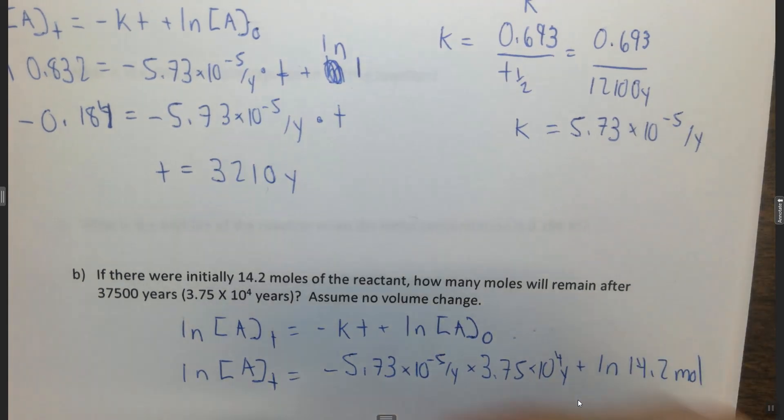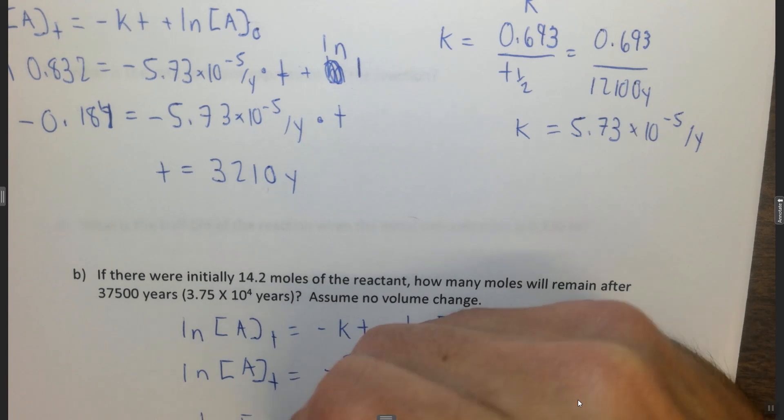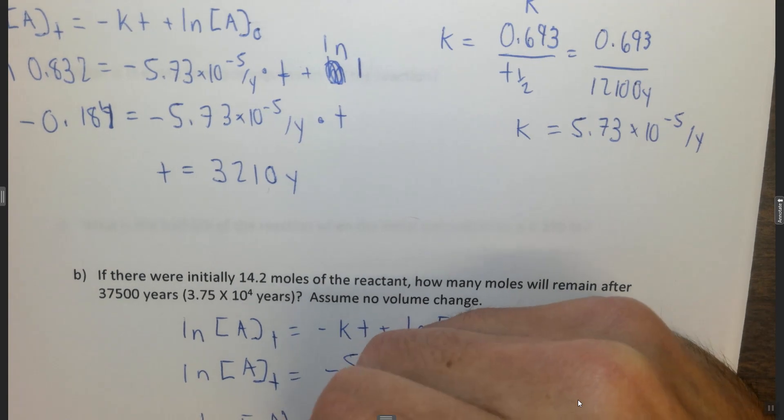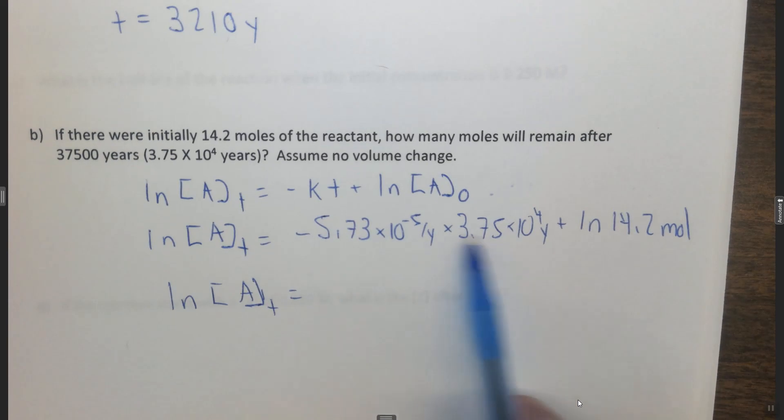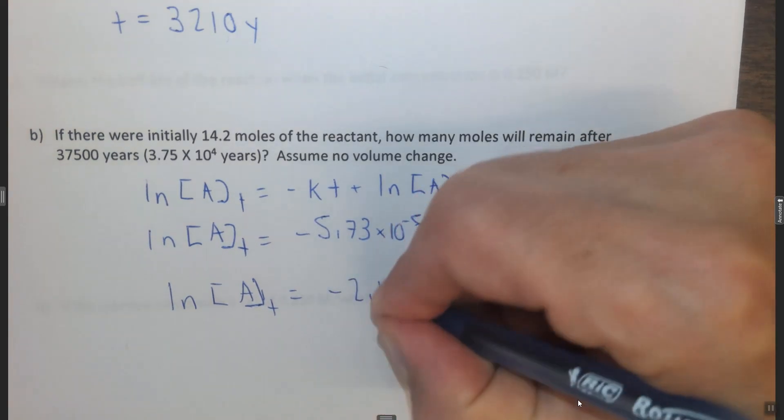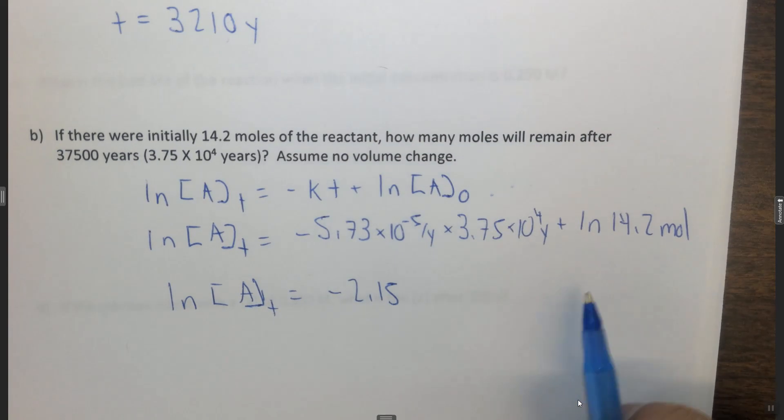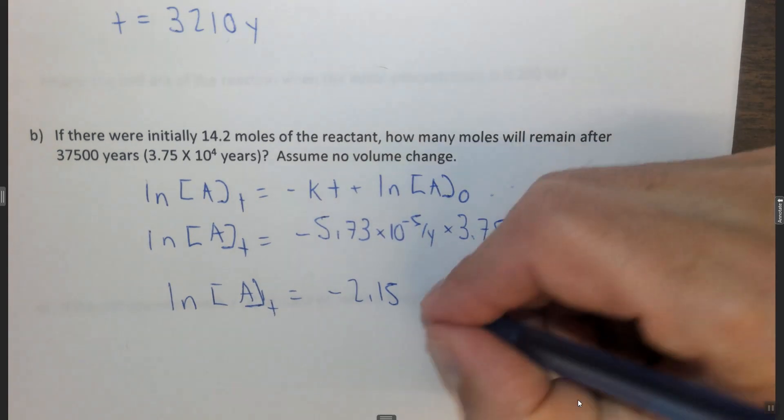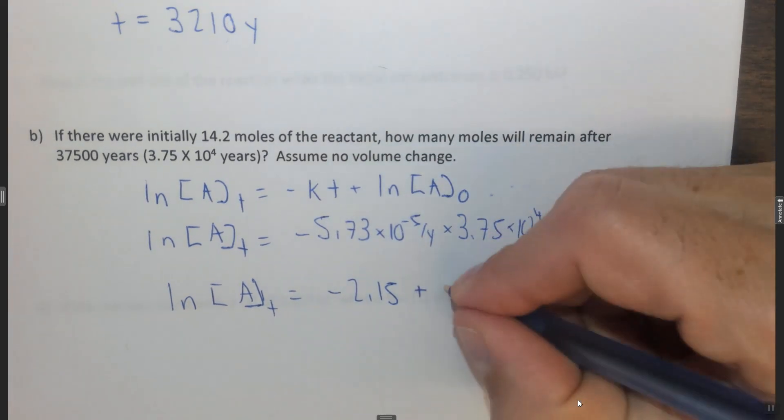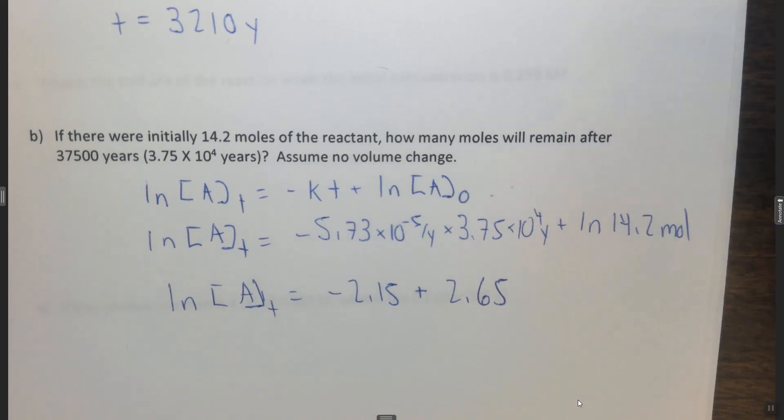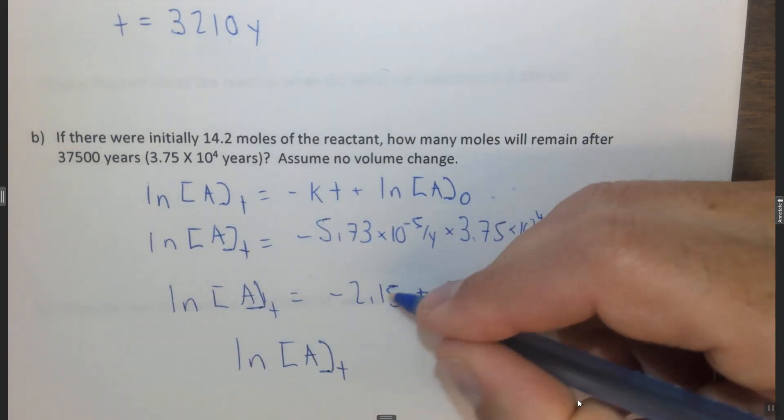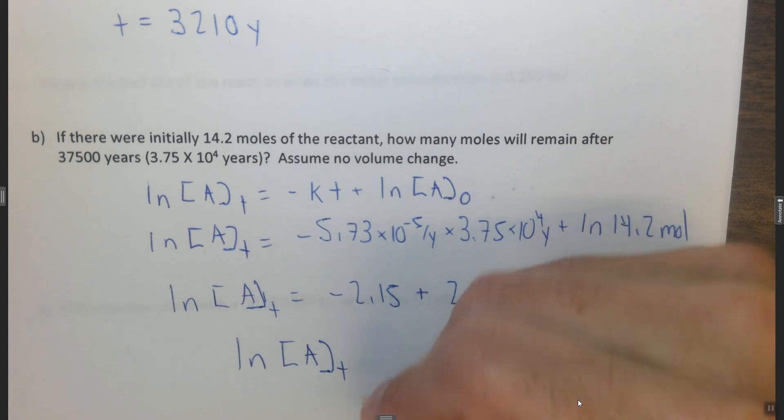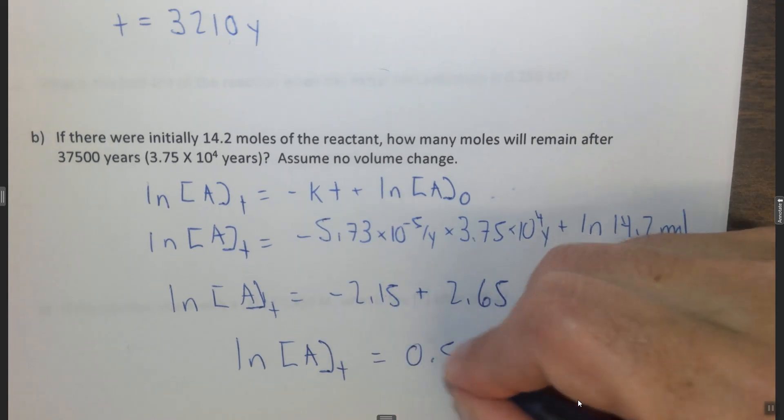So the ln of the concentration of A at some t equals, you want to multiply these two numbers together. When you multiply these two numbers together you get negative 2.15. Then you take the ln of your 14.2 and you find that that is 2.65. Then you find that the ln of the concentration of A at some t is equal to 0.50.